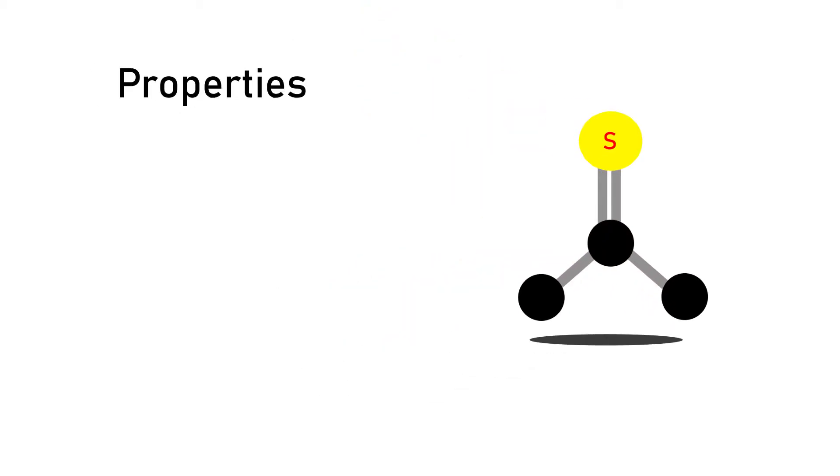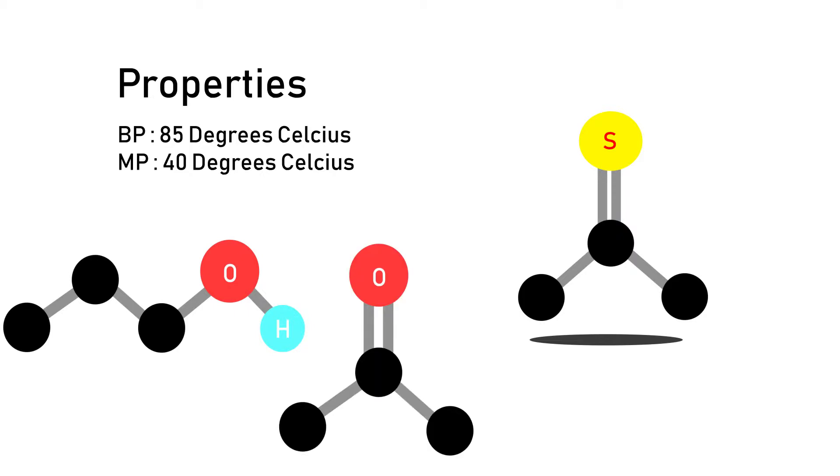For properties, thioacetone has a lower melting point than a 3-Carbon alcohol, but a higher one than the 3-Carbon ketone. At room temperature, it's a brown solid, but since it's synthesized at higher temperatures, it's more commonly observed in its brown liquid form.